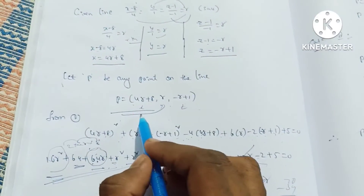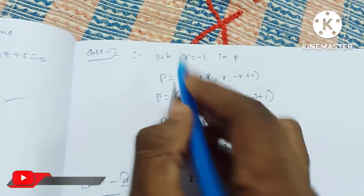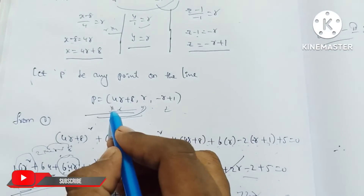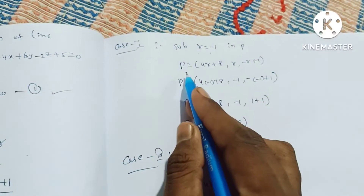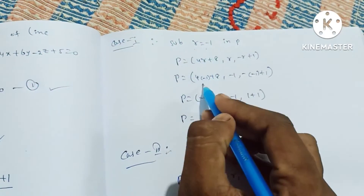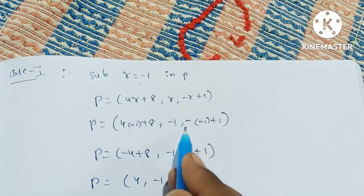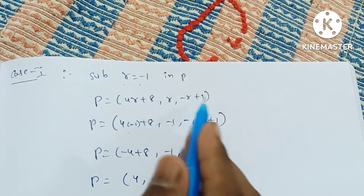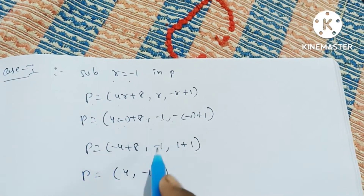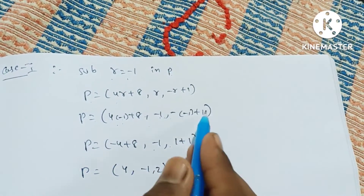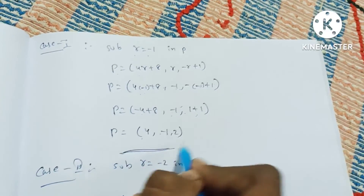Substituting r equal to minus 1 in P: P point is equal to (4r plus 8, r, minus r plus 1). So P is equal to 4 into minus 1 plus 8, comma minus 1, comma minus into minus 1 plus 1. That is minus 4 plus 8 is 4, minus 1, plus 1 plus 1 is 2. This point (4, minus 1, 2) is the point of intersection.